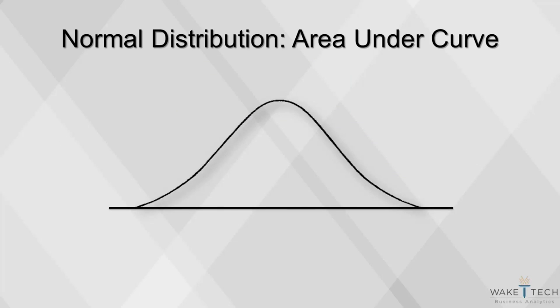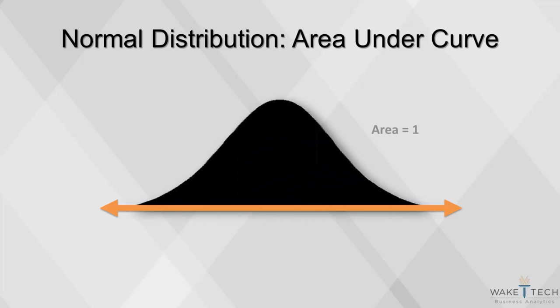With continuous variables, there is a continuum of possible values, such as all values between 0 and 100, or all values greater than 0. Instead of assigning probabilities to each individual value in the continuum, the total probability of 1 is spread over this continuum. Thus, the shaded area within the bell curve will always have an area of 1.